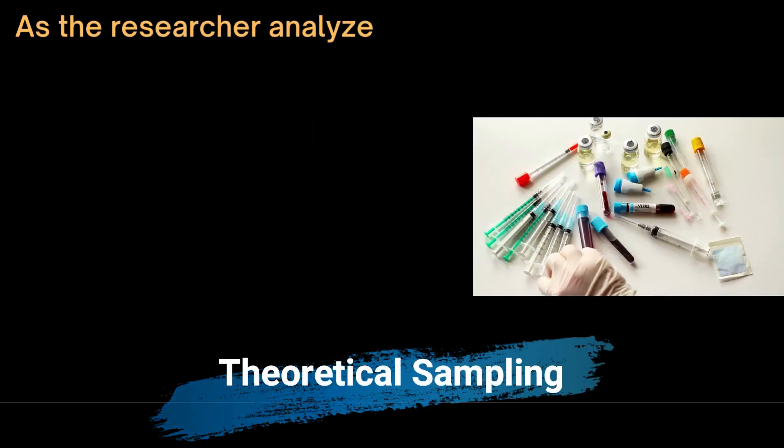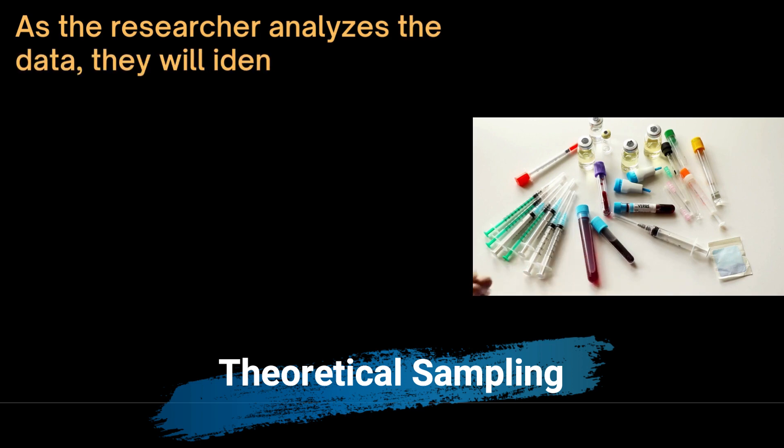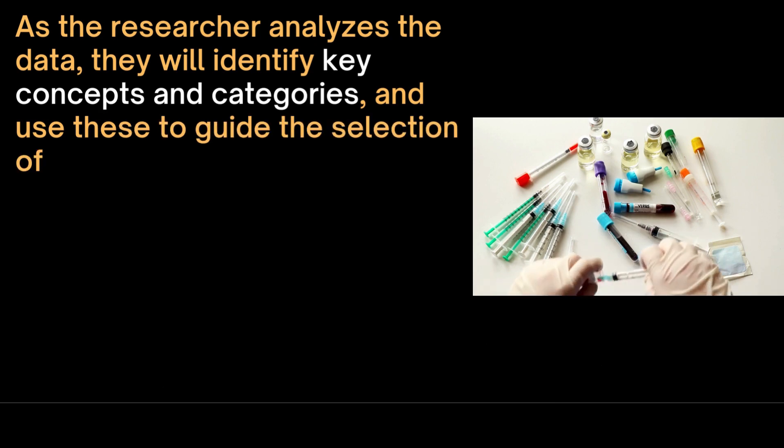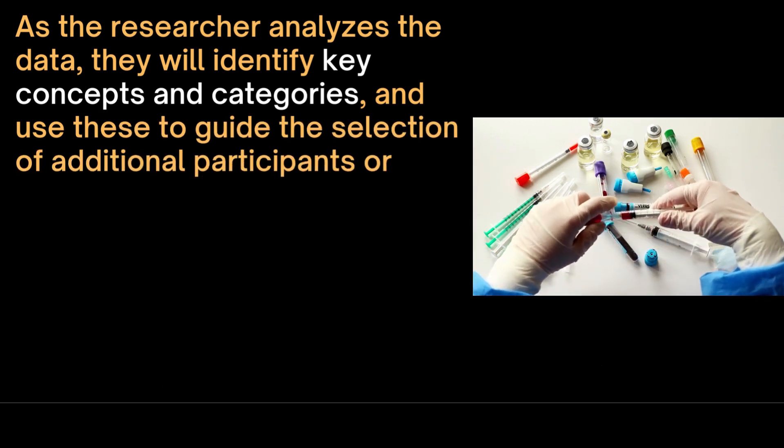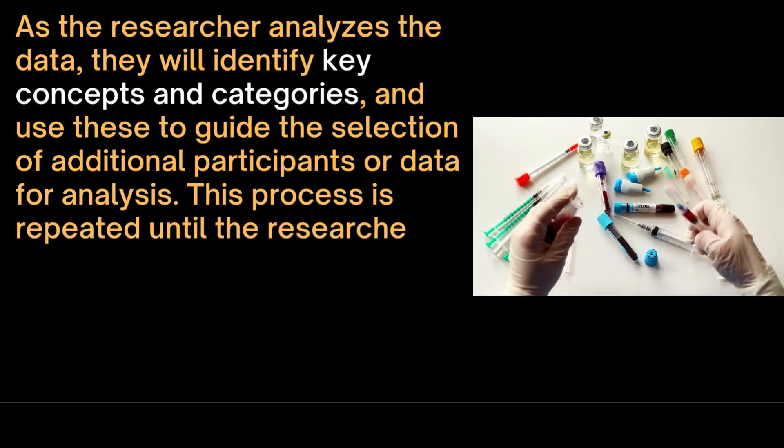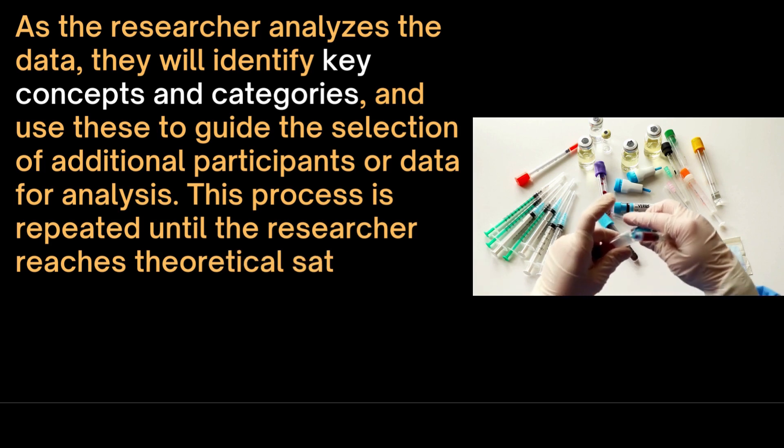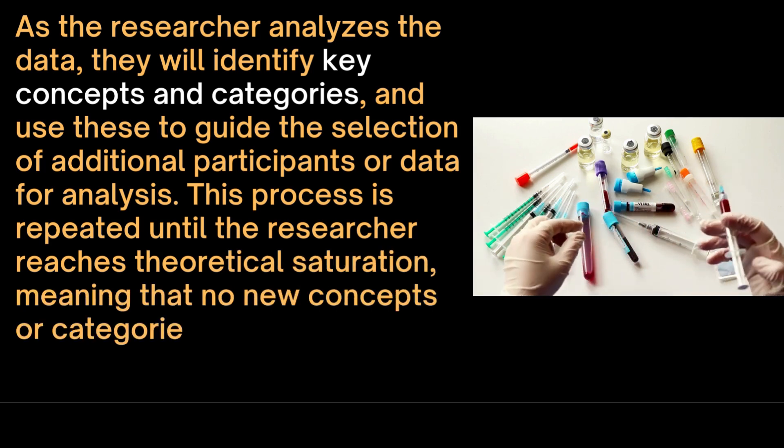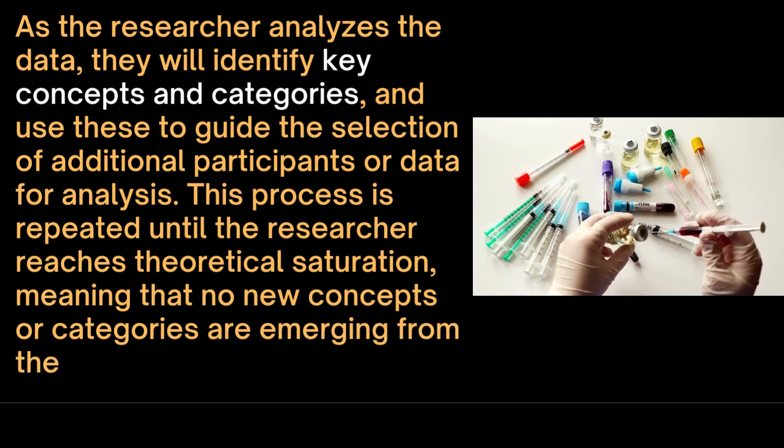As the researcher analyzes the data, they will identify key concepts and categories and use these to guide the selection of additional participants or data for analysis. This process is repeated until the researcher reaches theoretical saturation, meaning that no new concepts or categories are emerging from the data and the theory is well developed.